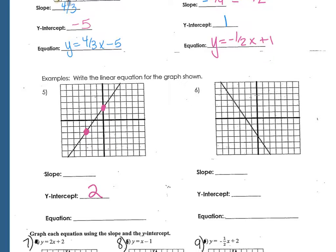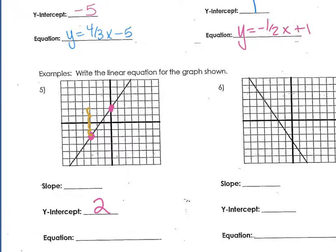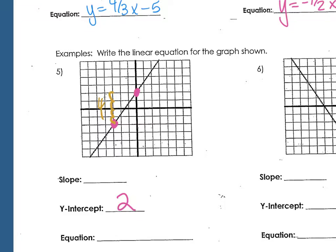And then I've got that other point there to help us find the rise to the run, the slope. So if I rise 1, 2, 3, 4, and I run 1, 2, 3, so my slope is 4 over 3.